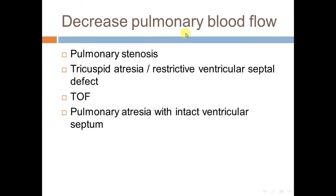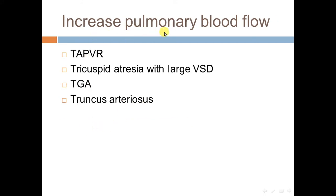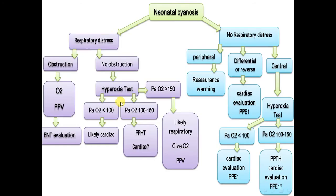Decreased pulmonary blood flow on X-ray is associated with: pulmonary stenosis, tricuspid atresia, restrictive ventricular septal defect, tetralogy of Fallot, and pulmonary atresia with intact ventricular septum. Increased pulmonary blood flow on X-ray is associated with: total anomalous pulmonary venous return, tricuspid atresia with large VSD, TGA, and truncus arteriosus.